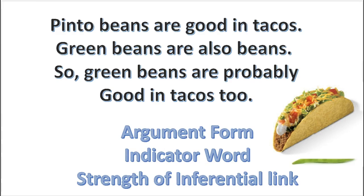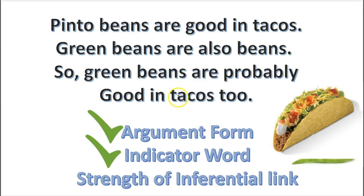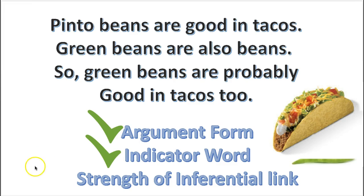Now tell me what reasons support your answer. That's right: the argument form and the indicator word. Notice the argument form is an argument from analogy — you know that's an inductive argument form. Also, the indicator word 'probably' shows probabilistic reasoning, which is also inductive. Now that you got the hang of it, let's continue.